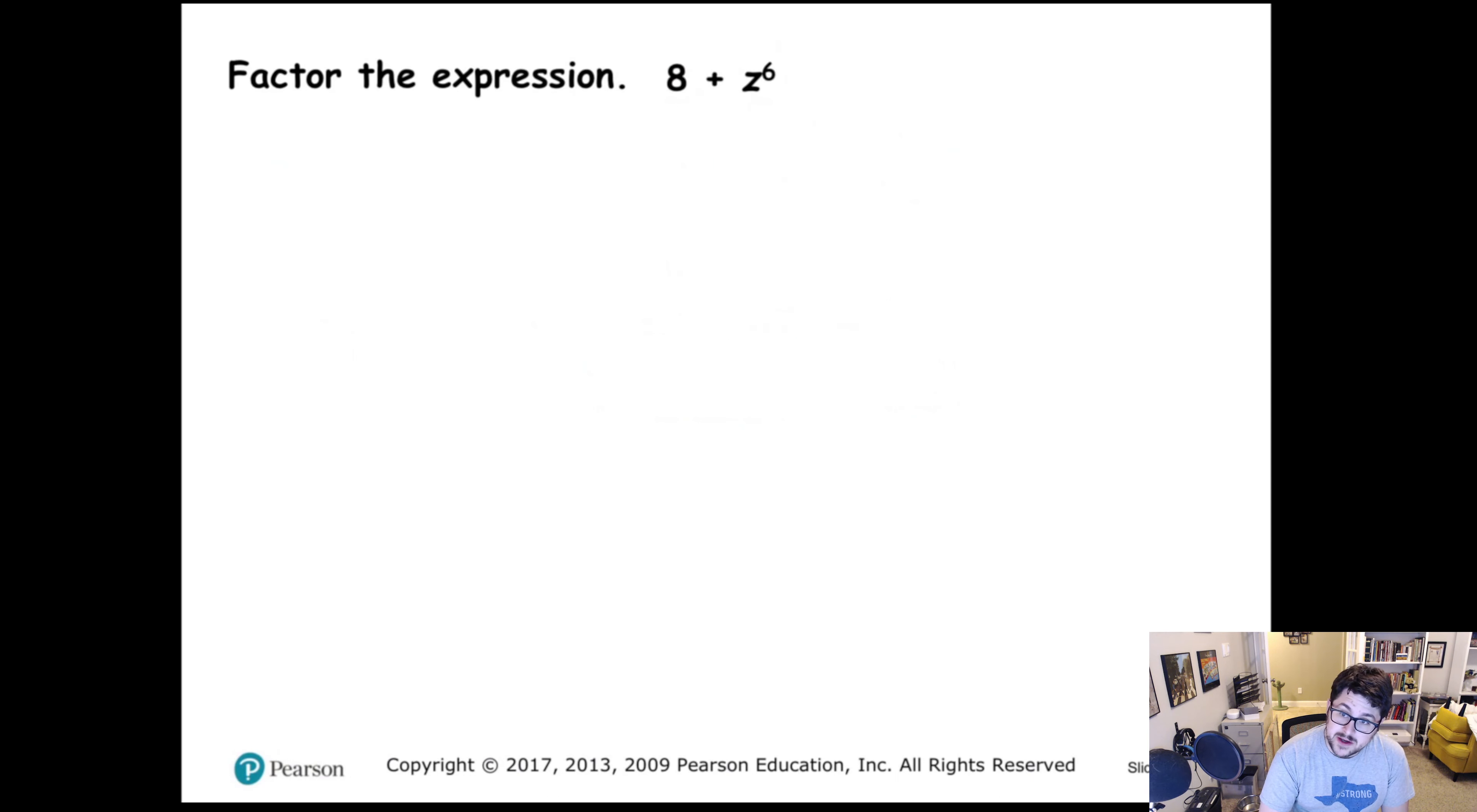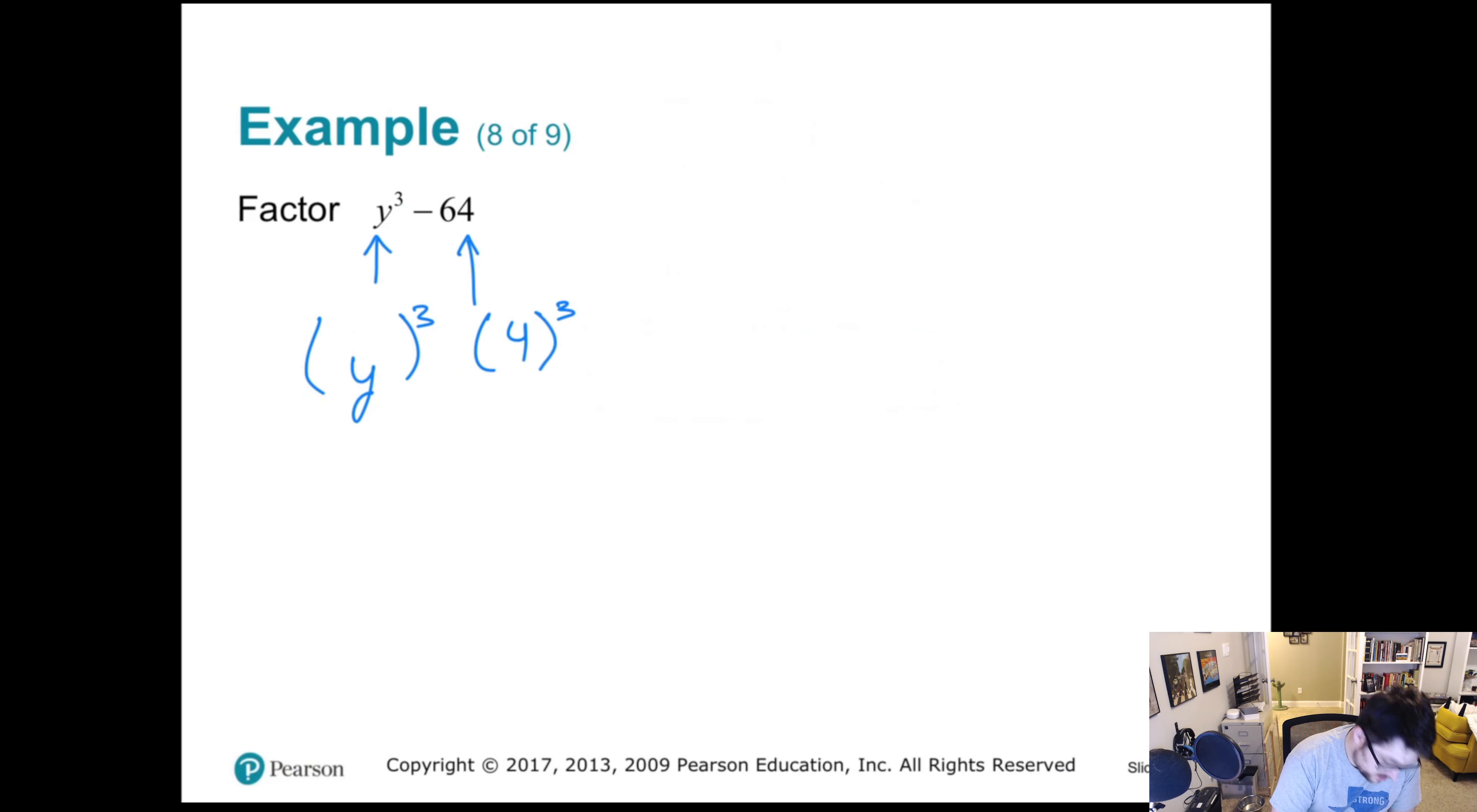So I'm going to skip a few slides. I'm going to go to this problem. This problem's great. Because what we're doing is, again, we're trying to turn this into things cubed. So what cubed gives y³? Well, let me write this a little bit better. So what cubed gives y³? Well, y cubed. And what cubed gives 64? Well, 4 cubed. So really, we have y³ - 4³. So y is our a, and 4 is our b.